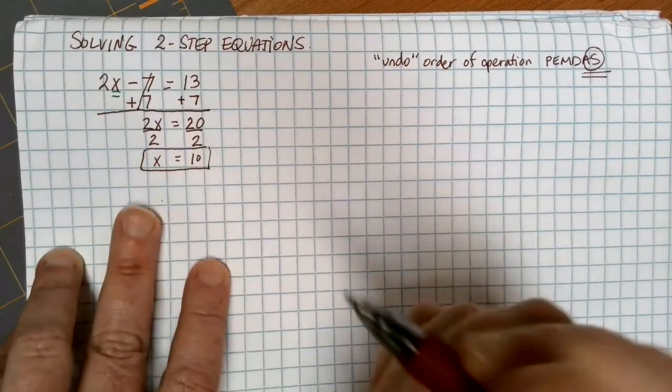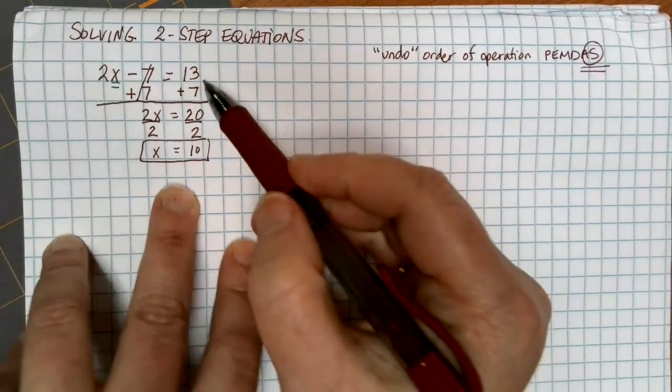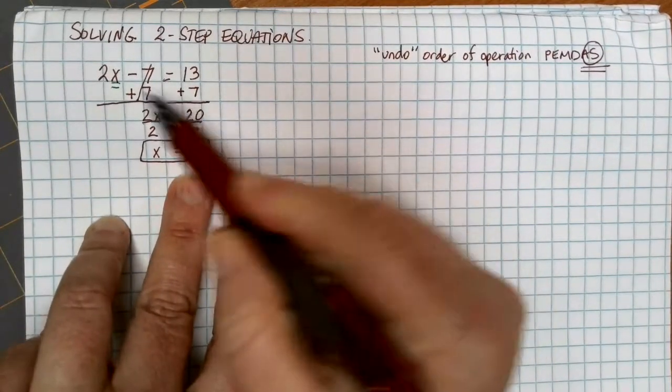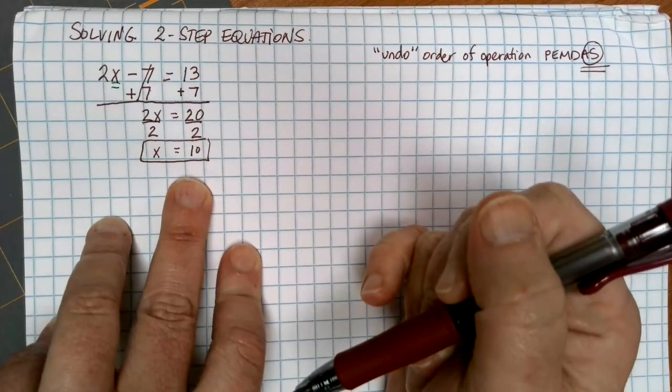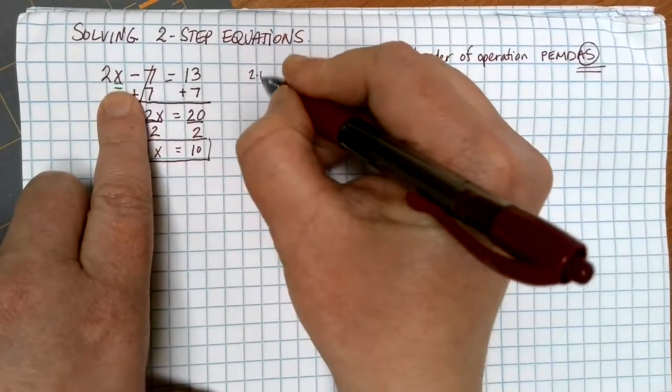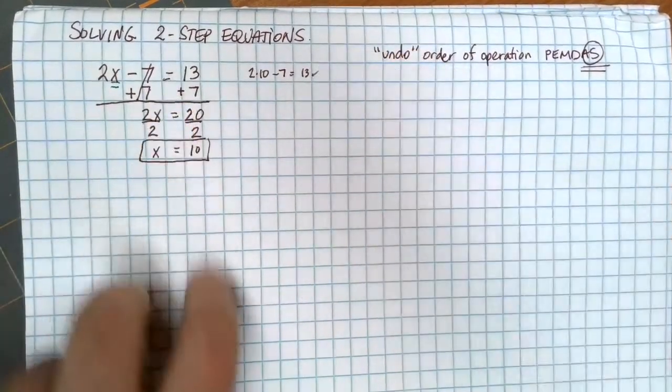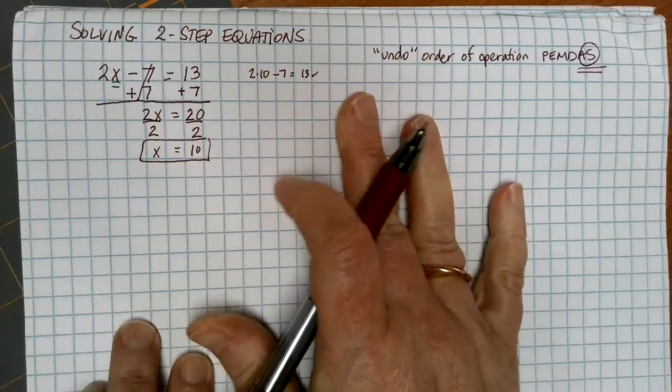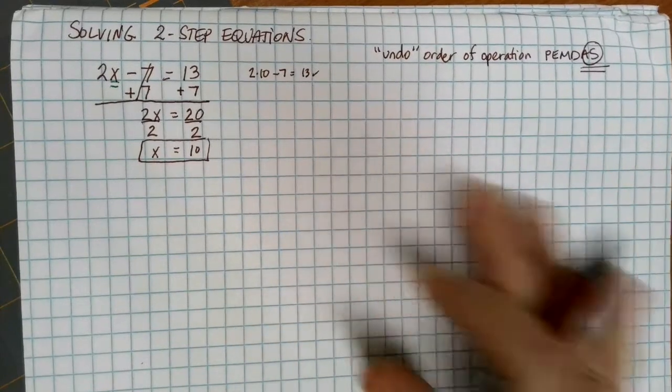Even in a more complicated problem like this, remember the purpose of an equation is to make that statement true. So if 10 is a solution, I should be able to put 10 in for x and still come up with the right answer. So 2 times 10 would give me 20, minus 7 would give me 13, and that does check out. So you can always use this as a backup to see if the solution that you got makes sense or is valid.